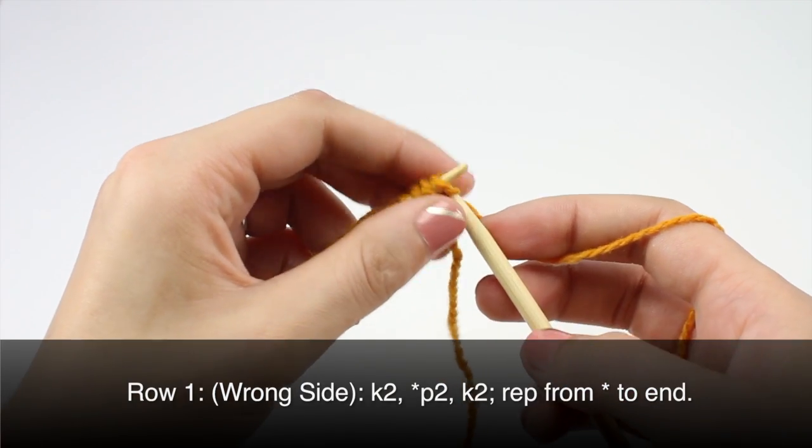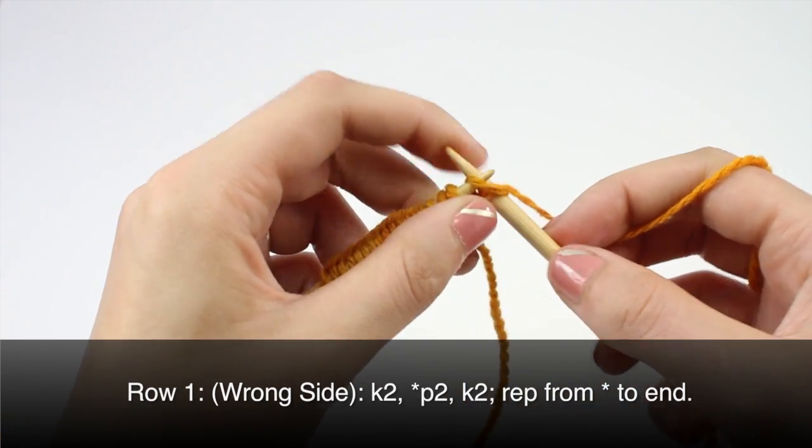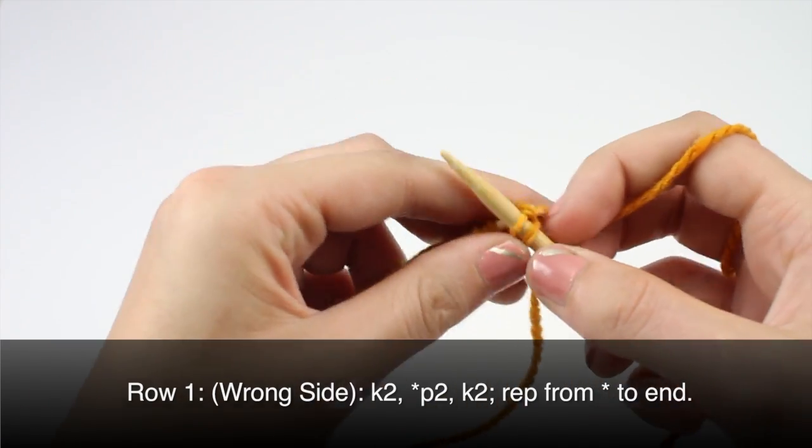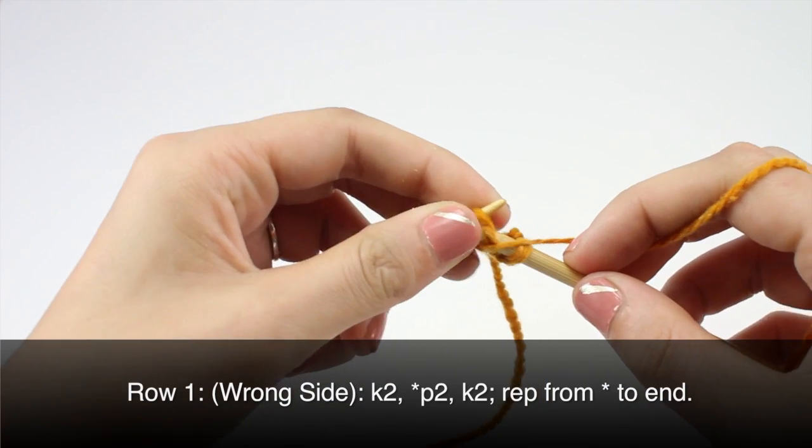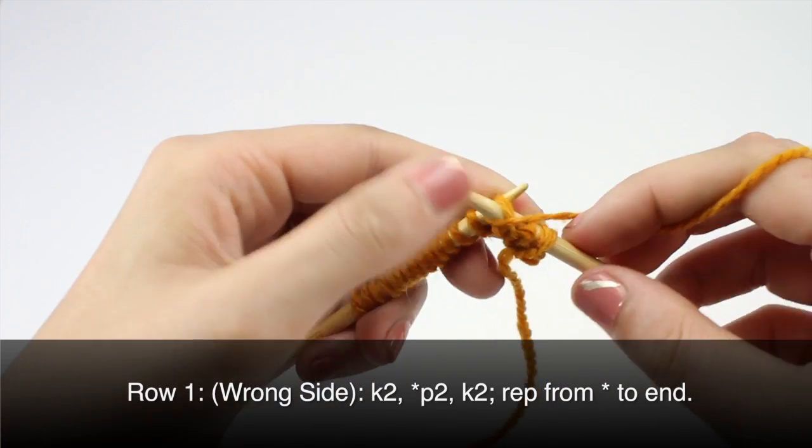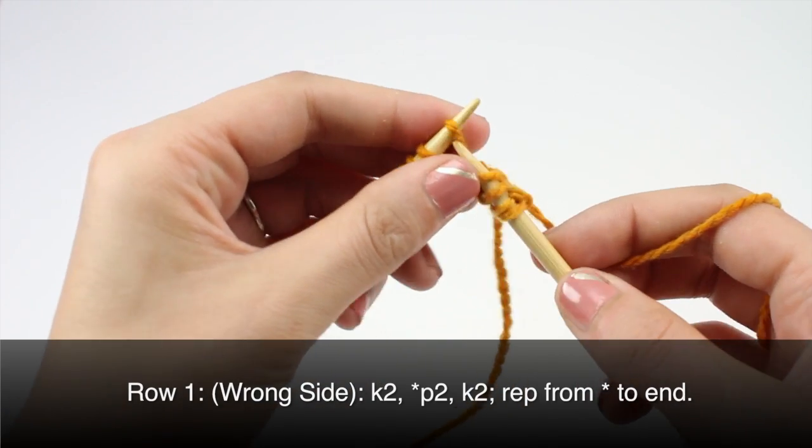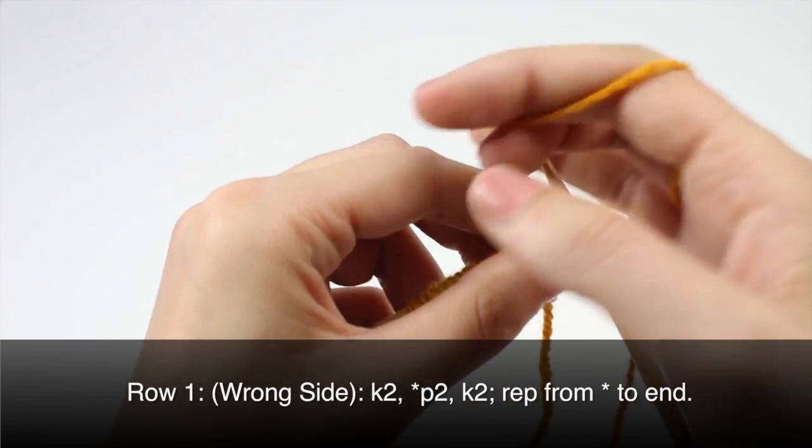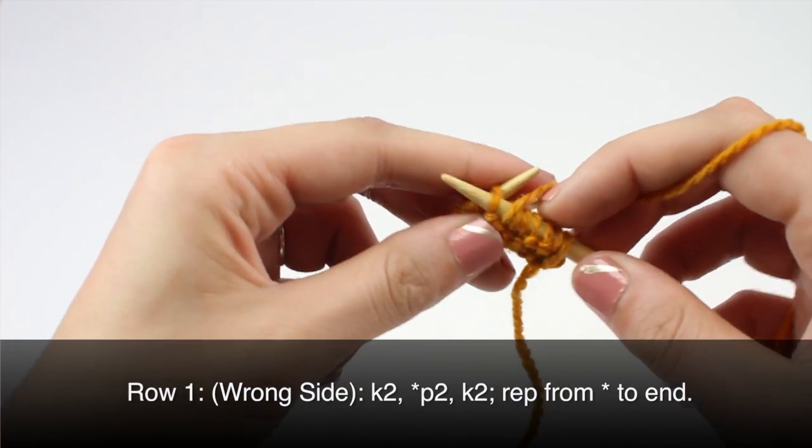Row one, beginning on the wrong side. Knit two. Begin your repeat by purling two and knitting two. Knit two together through the back loop. Repeat this until the end of the row.